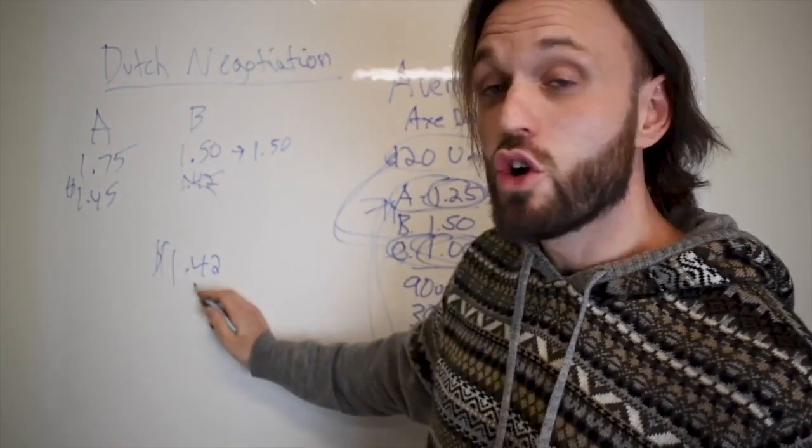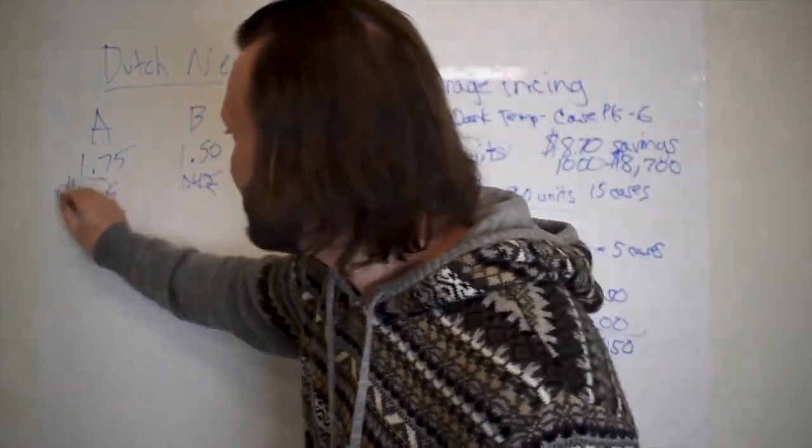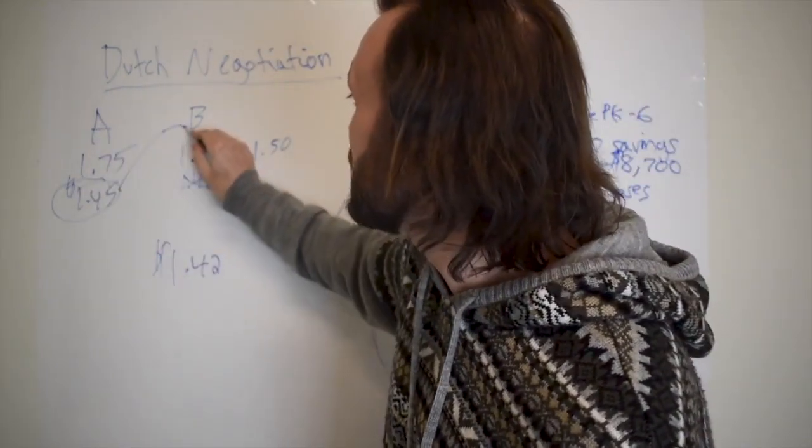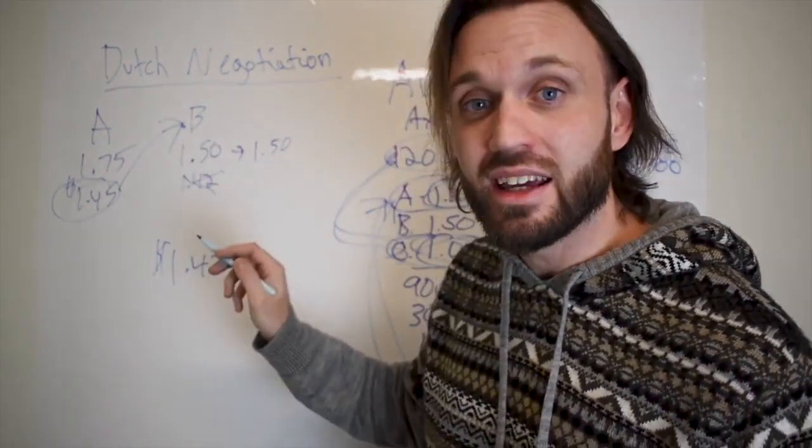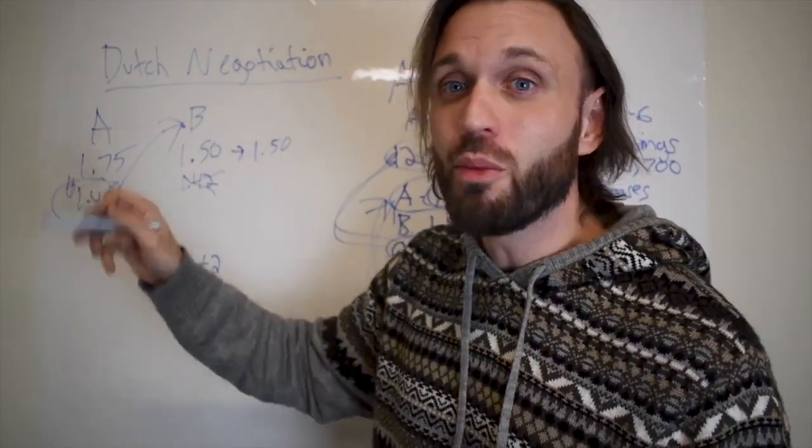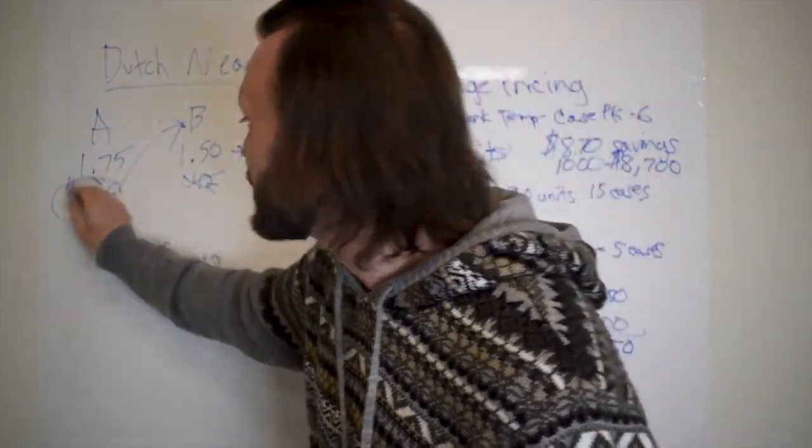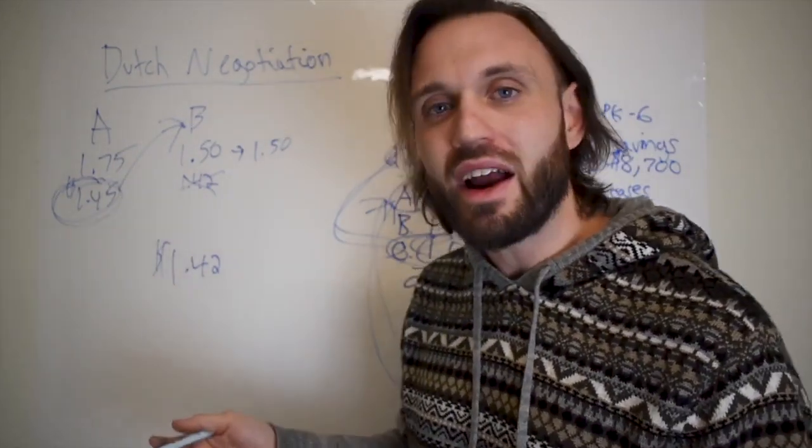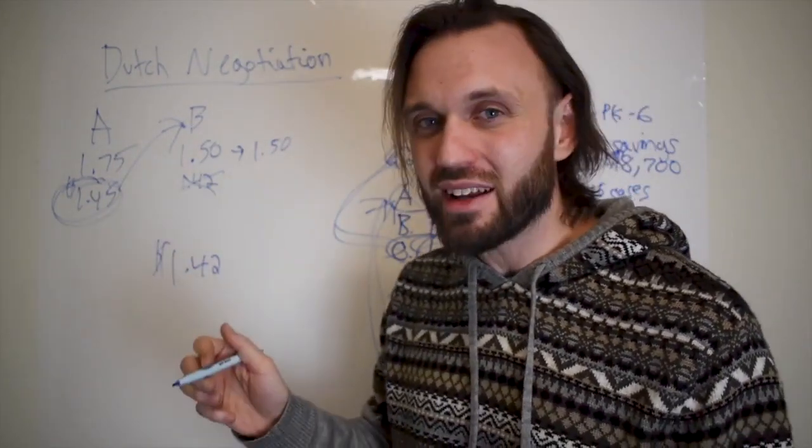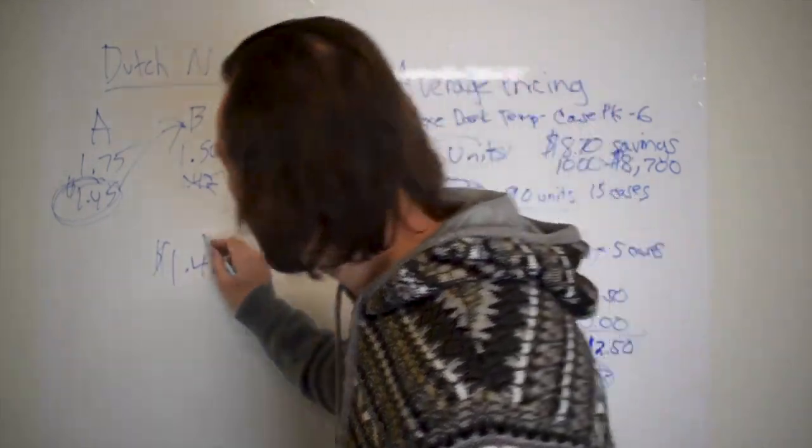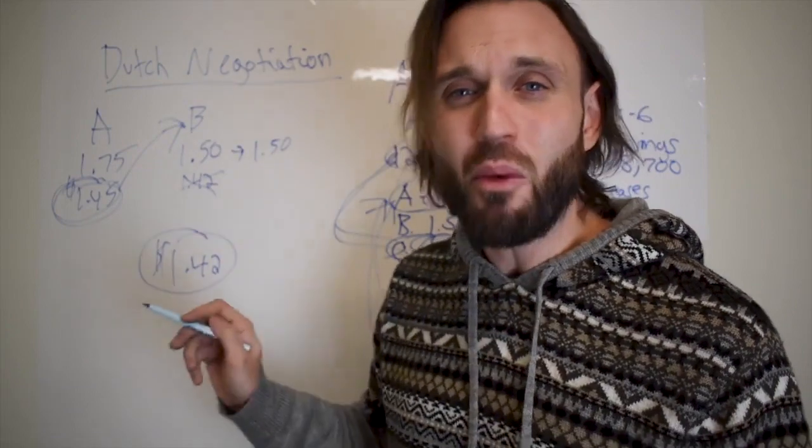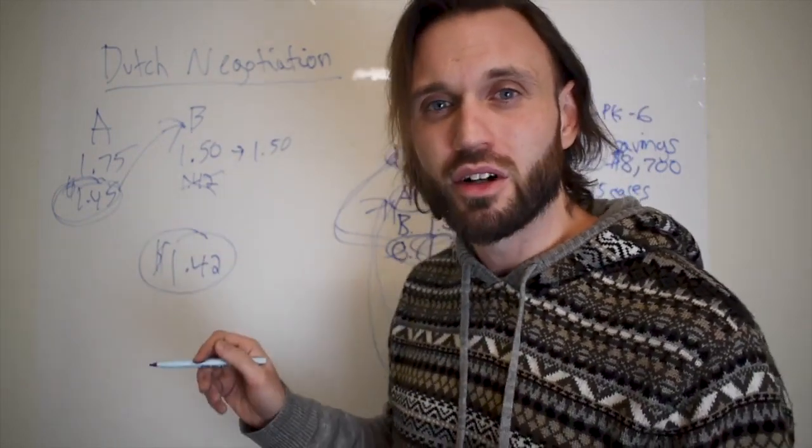So now you're only three cents away from this number. So you're going to take this $1.45 and you're going to bring it back to distributor B and say, hey, distributor A told me they will give me this product for $1.45. Can you beat that? And then they're going to think about it. And there's a high chance, a very high chance that they're going to come down to this original asking price of $1.42 because they want the sale over their competitor.